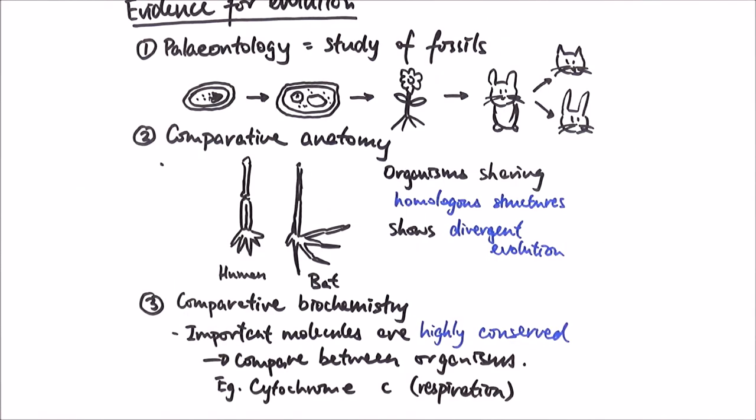So there you have it, so there are three different types of evidence to show evolution taking place. First of all, we've got paleontology, the study of fossils. We've got comparative anatomy and comparative biochemistry, where we compare structural differences and chemical differences between the different organisms.